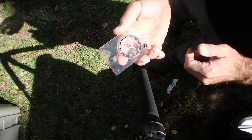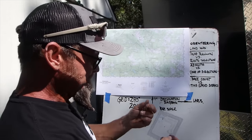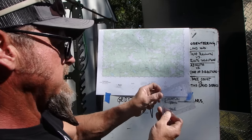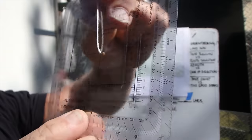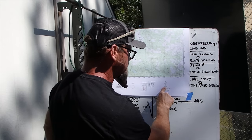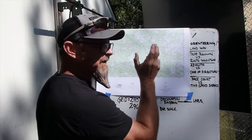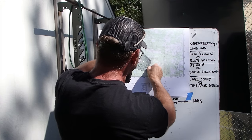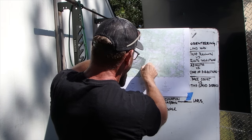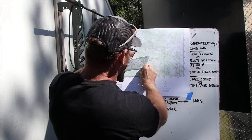But how far am I going to walk? Now we have a heading, so we need to figure out the distance. We can use the map's 1:24,000 scale representation — for every inch on the map there are 24,000 inches on the ground. Measuring out from the start point to that hilltop gives 1,800 meters. So 1,800 meters is the distance.